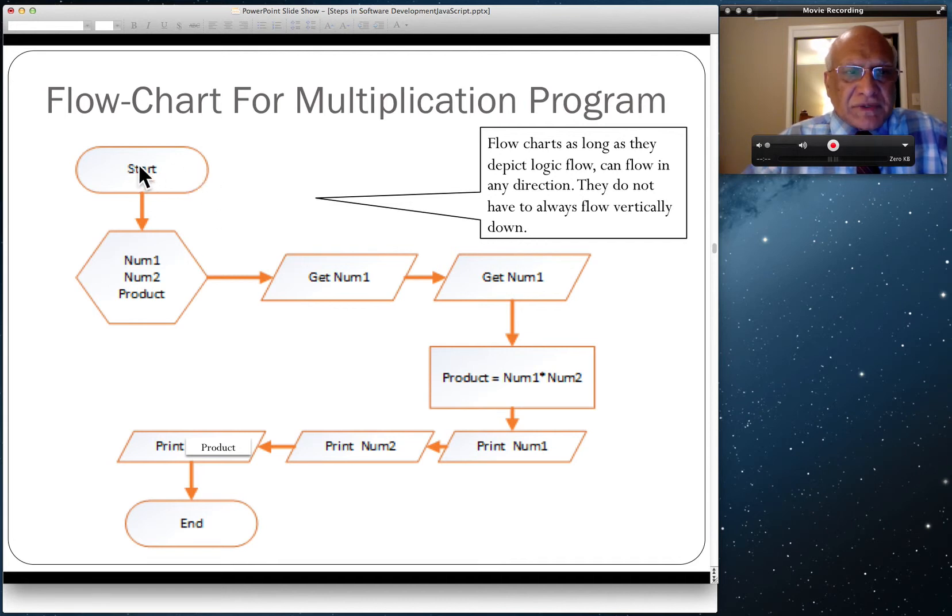We start the multiplication of two numbers program. The preparation symbol shows we're going to have two values, Num1 and Num2, provided by the user, and Product will be where the values will be stored.